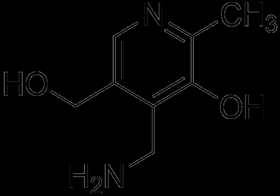PLP aids in the synthesis of hemoglobin by serving as a coenzyme for the enzyme ALA synthase. It also binds to two sites on hemoglobin to enhance the oxygen binding of hemoglobin.